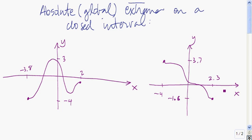For this function right here, the absolute maximum is 3.7, and it happens at this endpoint. The absolute minimum is negative 1.6, and it happens at this endpoint.